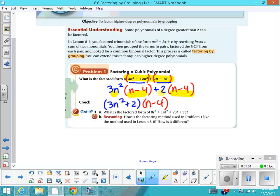Let's do one more for practice. Let's copy down this Got It problem, this one right here. That's 8t³ + 14t² + 20t + 35.